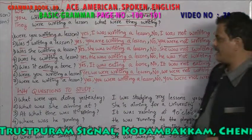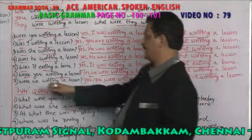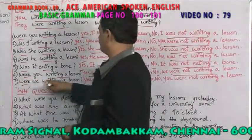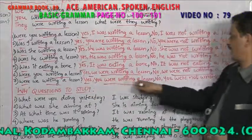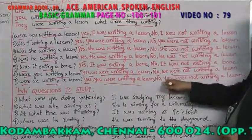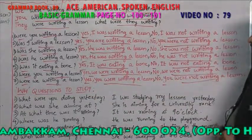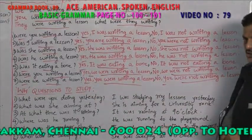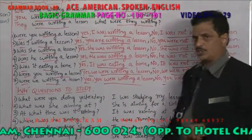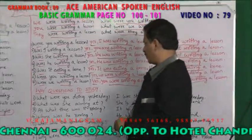Was I writing a lesson? Yes, you were writing a lesson. No, he was not writing a lesson — he wasn't writing a lesson. Was it eating a bone in past continuous? Yes, it was eating a bone. No, it was not eating a bone. Were we writing a lesson? Yes, we were writing a lesson. No, we weren't writing a lesson. You were writing a lesson. No, you were not writing a lesson. WH questions are the most important.